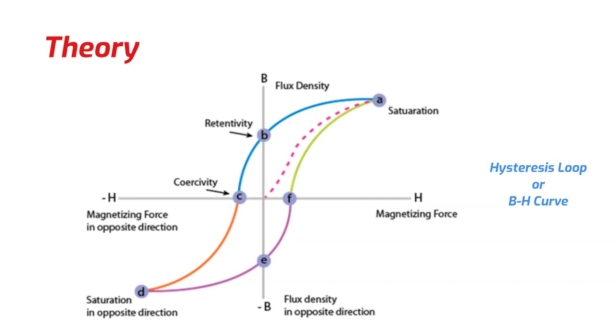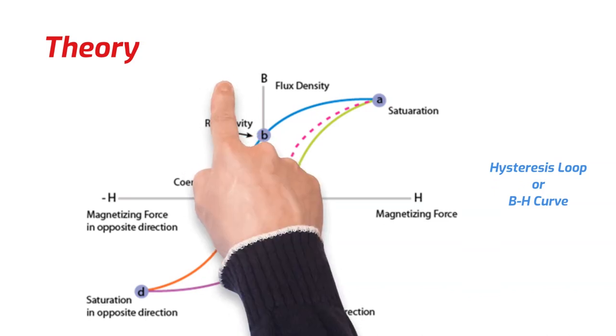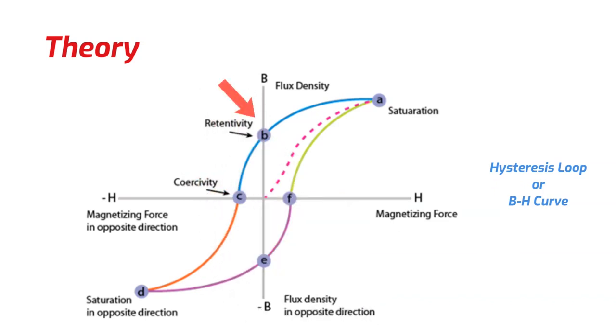When the magnitude of the magnetic field starts decreasing, the domains tend to stay aligned, which means even when the applied magnetic field is zero, there will be a retaining magnetism. This retentivity point is shown by point B.